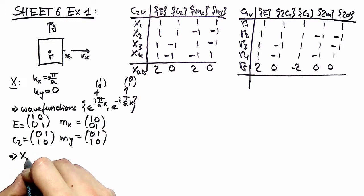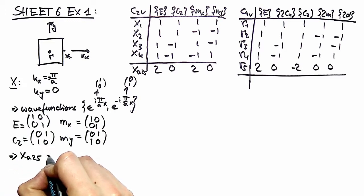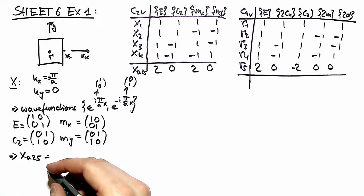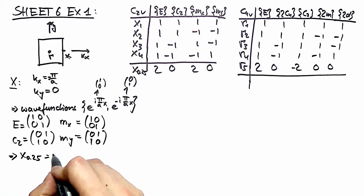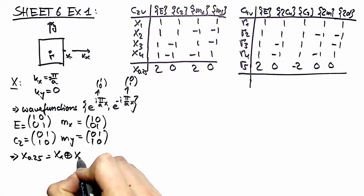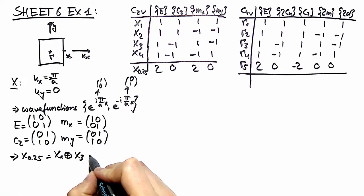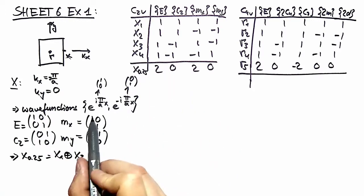Via the decomposition theorem we can conclude that X(0.25) consists out of X1 and X3. You can see that by looking at the character table.